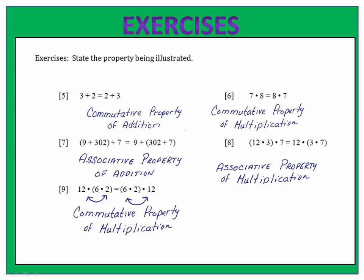Exercise five shows us that three plus two is the same as two plus three — that's the commutative property of addition. Exercise six shows us that seven times eight is the same as eight times seven — that's the commutative property of multiplication.